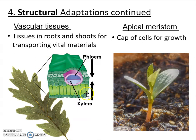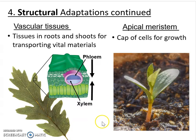Phloem takes sugars produced in the photosynthetic part of the organism and transports those down from the leaves to the roots and other non-photosynthetic parts of the plant. Xylem, on the other hand, works in the opposite direction — transporting water and minerals from the roots up to the leaves. A helpful mnemonic: you xylem up, flow them down. What's flowing down are the sugars, and xylem is transporting the water and minerals from the soil upward.